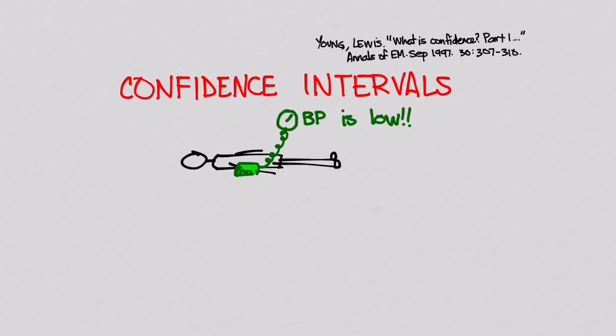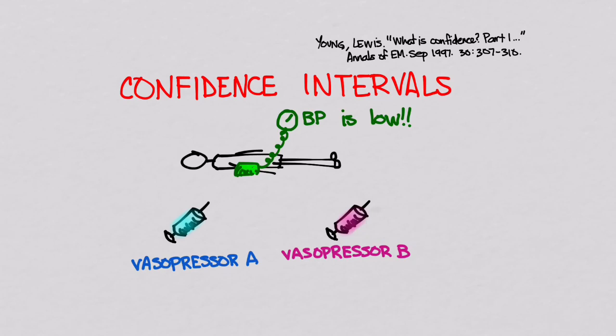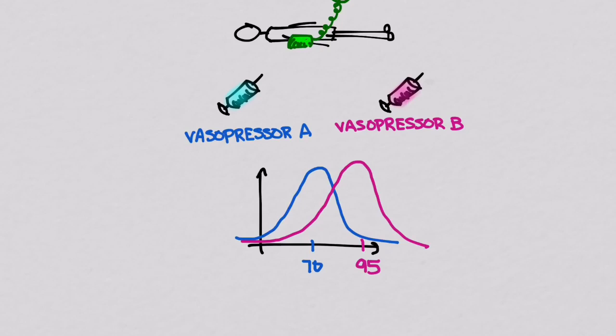Let's say that we have a patient who is not doing so well and their blood pressure is low, and we want to try giving them a drug to raise that blood pressure. We have two choices: vasopressor A and vasopressor B, and we want to determine which one is better. So we do a trial and look at two samples. One group gets vasopressor A, one gets vasopressor B. The mean increase in blood pressure for vasopressor A was 70, and for vasopressor B was 95, so the difference is 25.